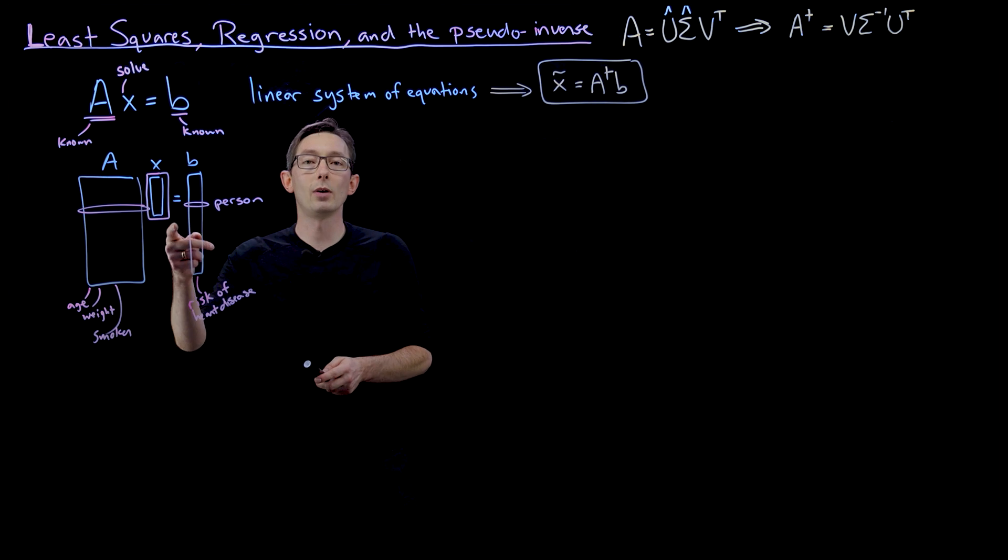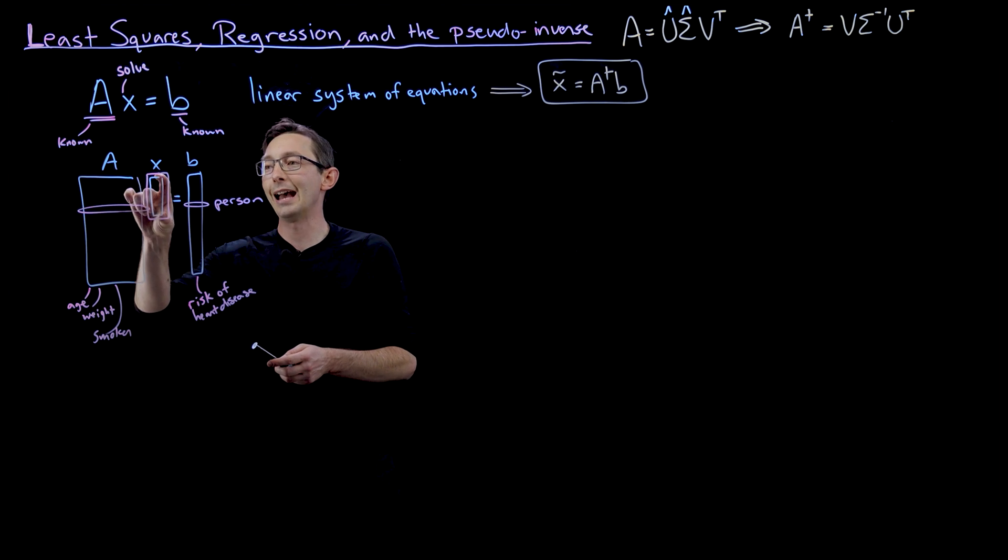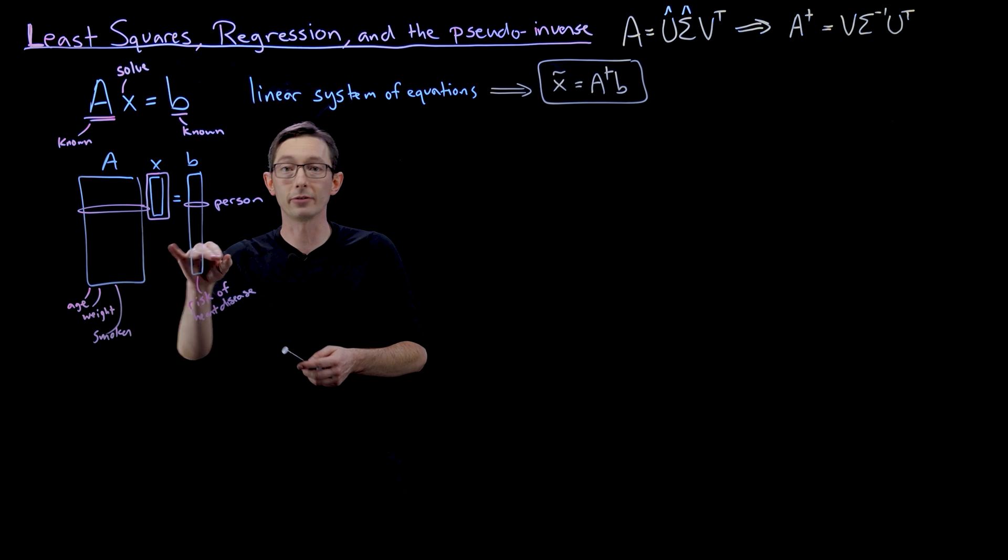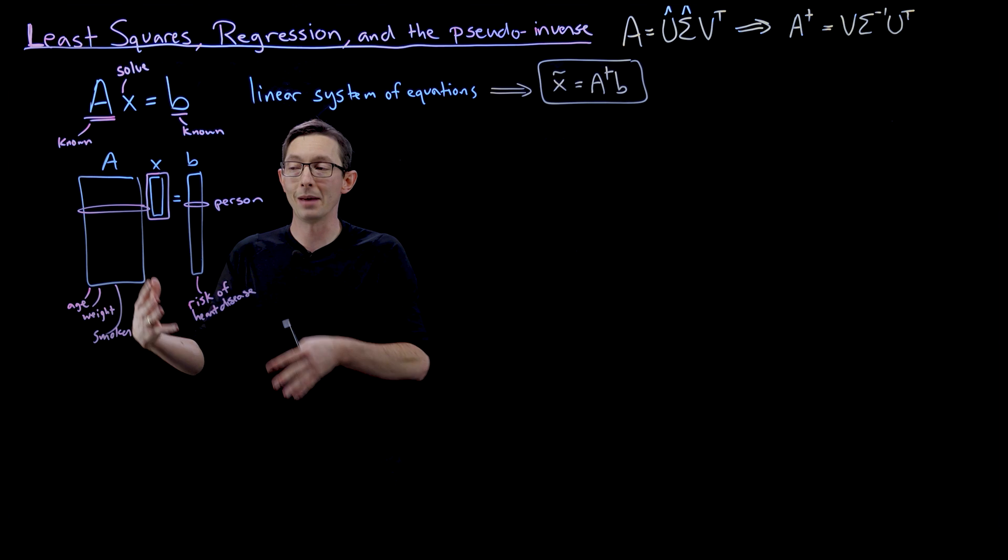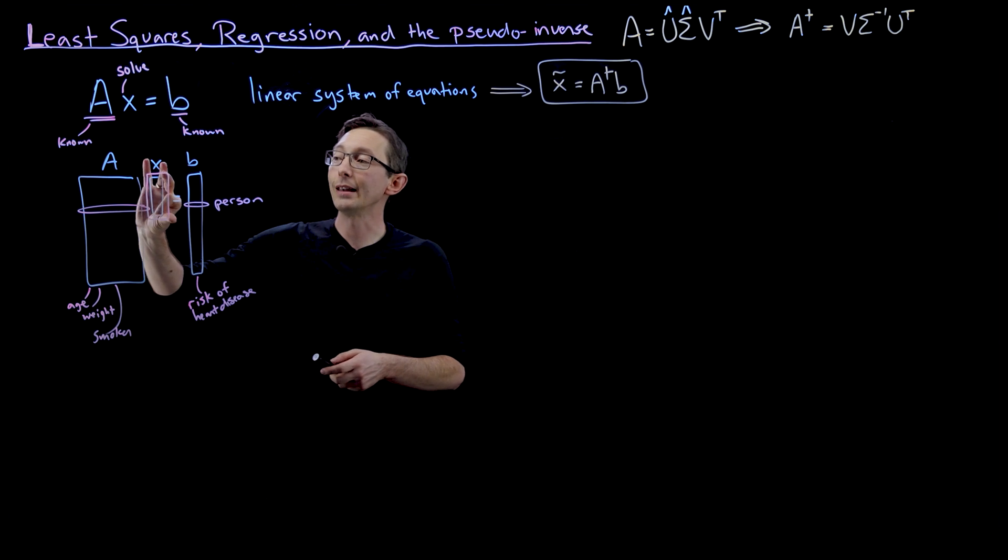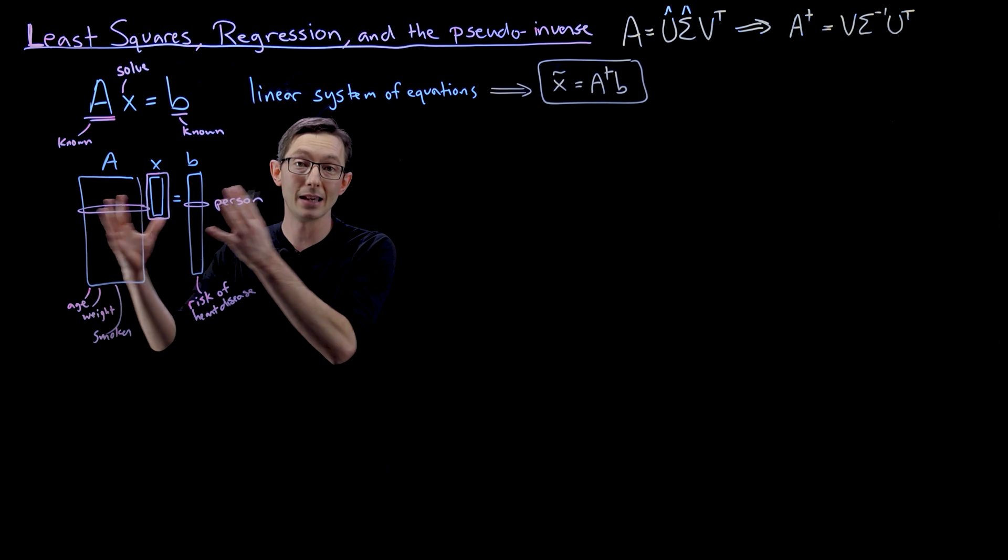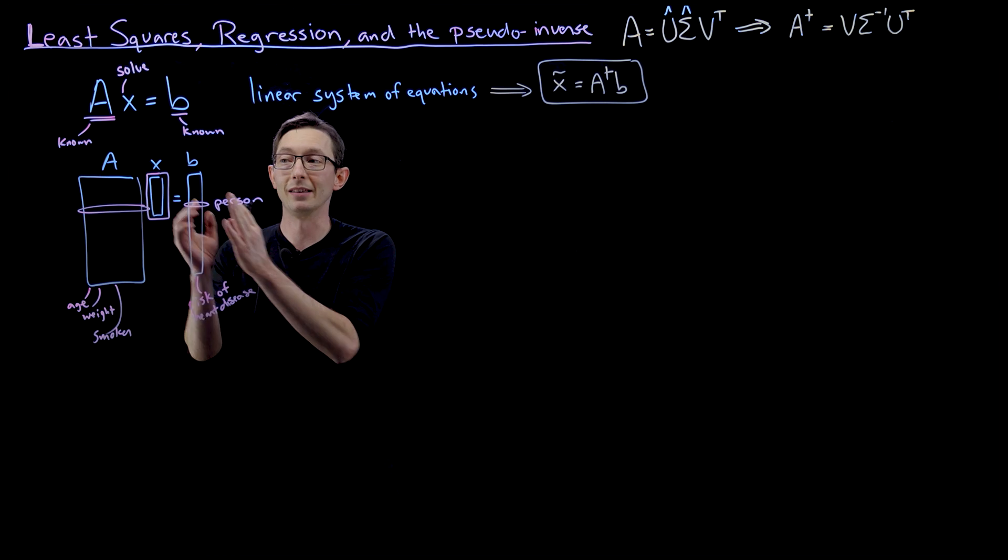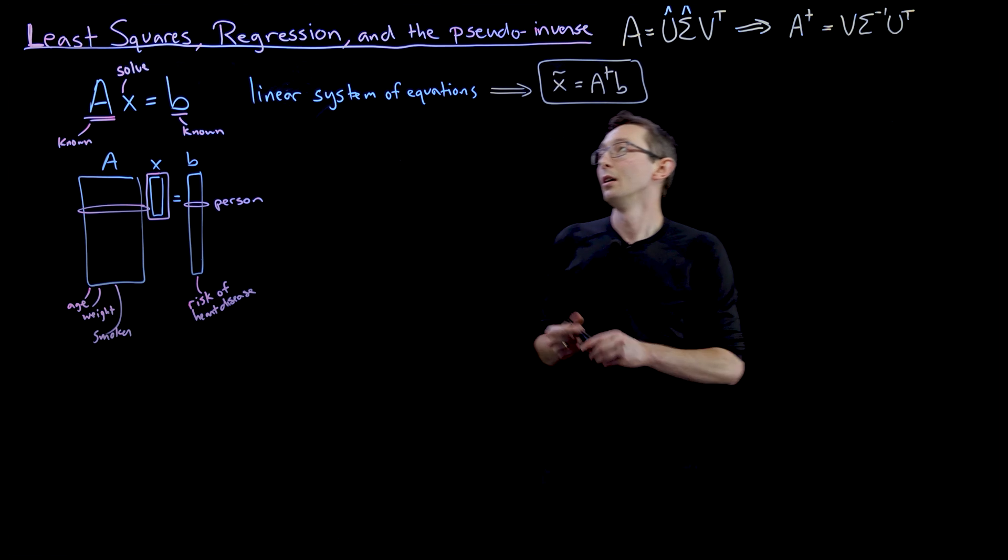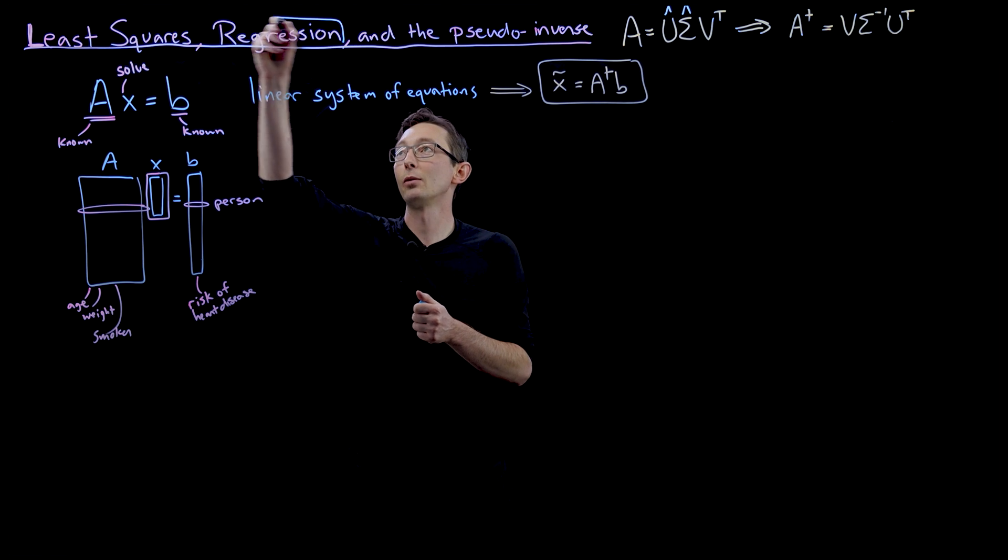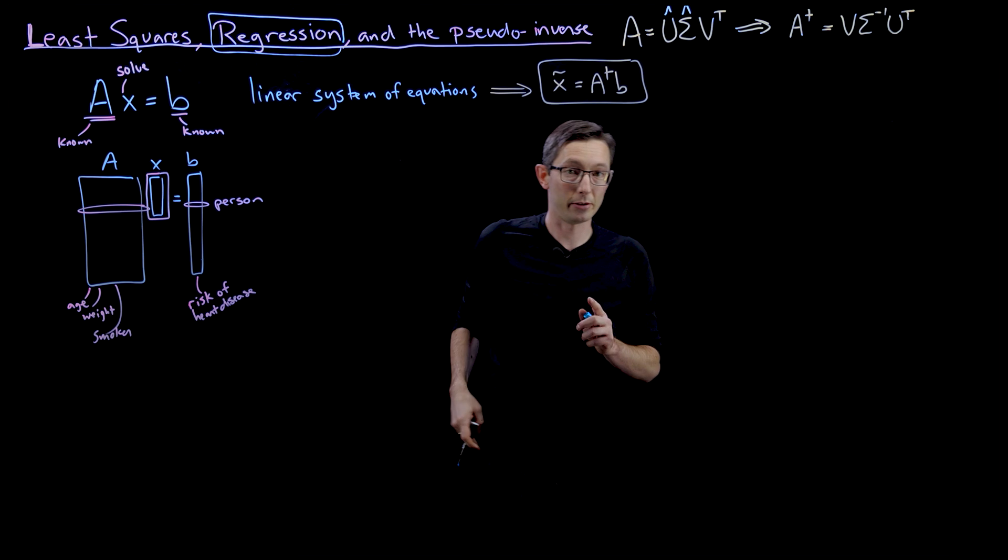And again, this is something where we're going to want to solve. We're not going to be able to find an X that exactly solves this model for every single person because it's over-determined and noisy and messy. But we want to find the X that minimizes the error norm between AX and B that gives us the best prediction of B given information in A. So that's how we're using least squares to solve these regression models.